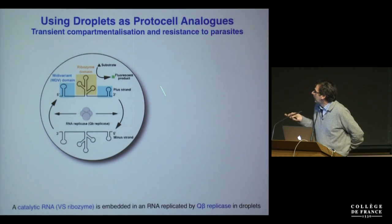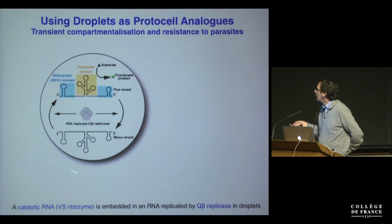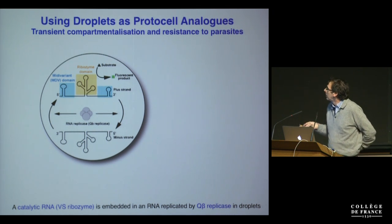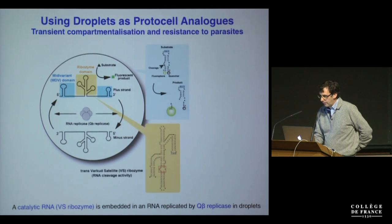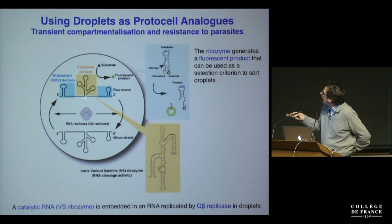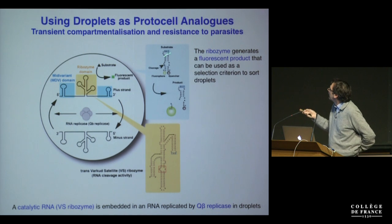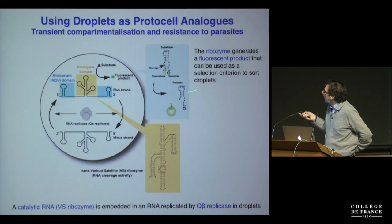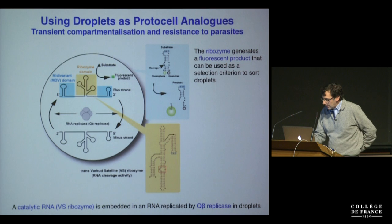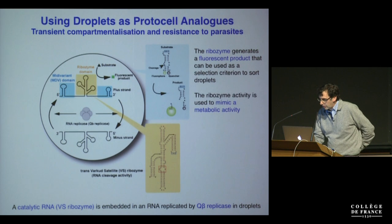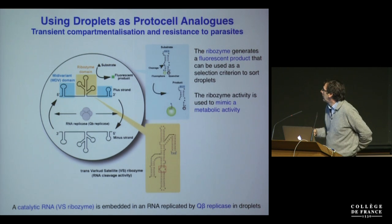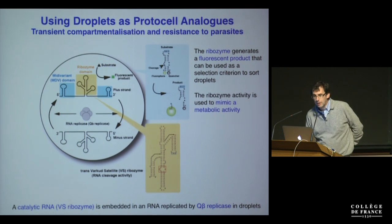Just like Spiegelman, we're replicating an RNA using Q-beta replicase in the droplet. Embedded in the RNA we have the VS ribozyme. The VS ribozyme catalyses the formation of a fluorescent product in the drops. The ribozyme activity is used to mimic a metabolic activity, so fluorescent droplets can be sorted and recovered.